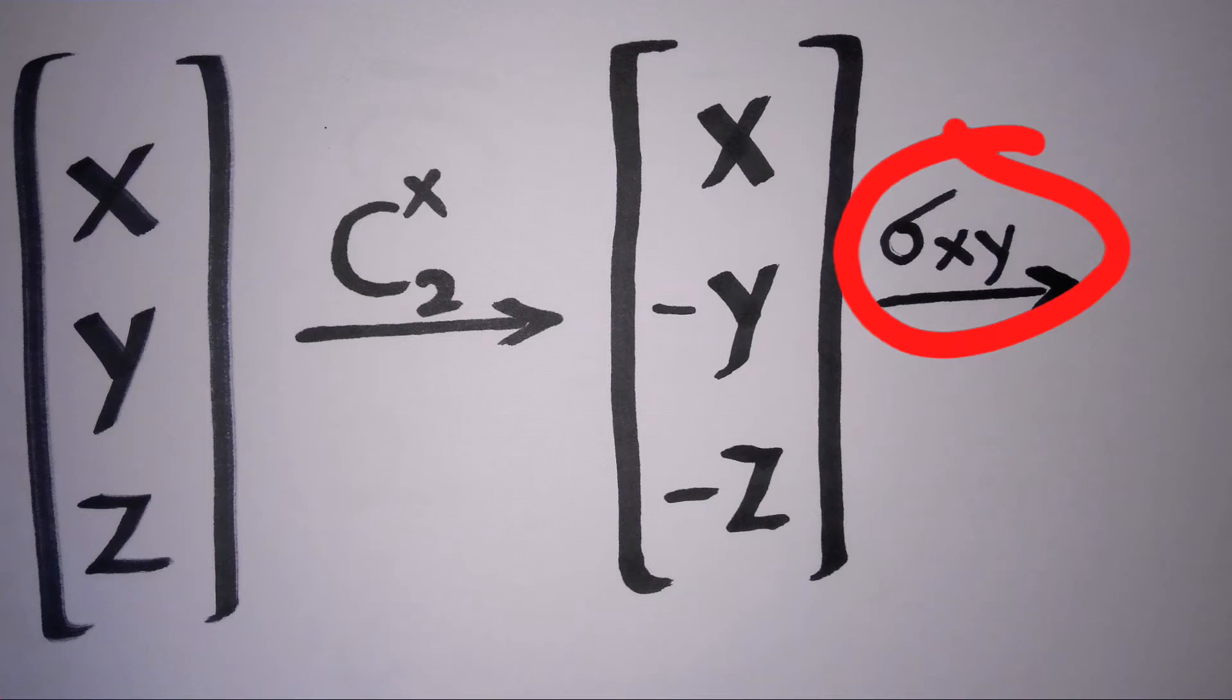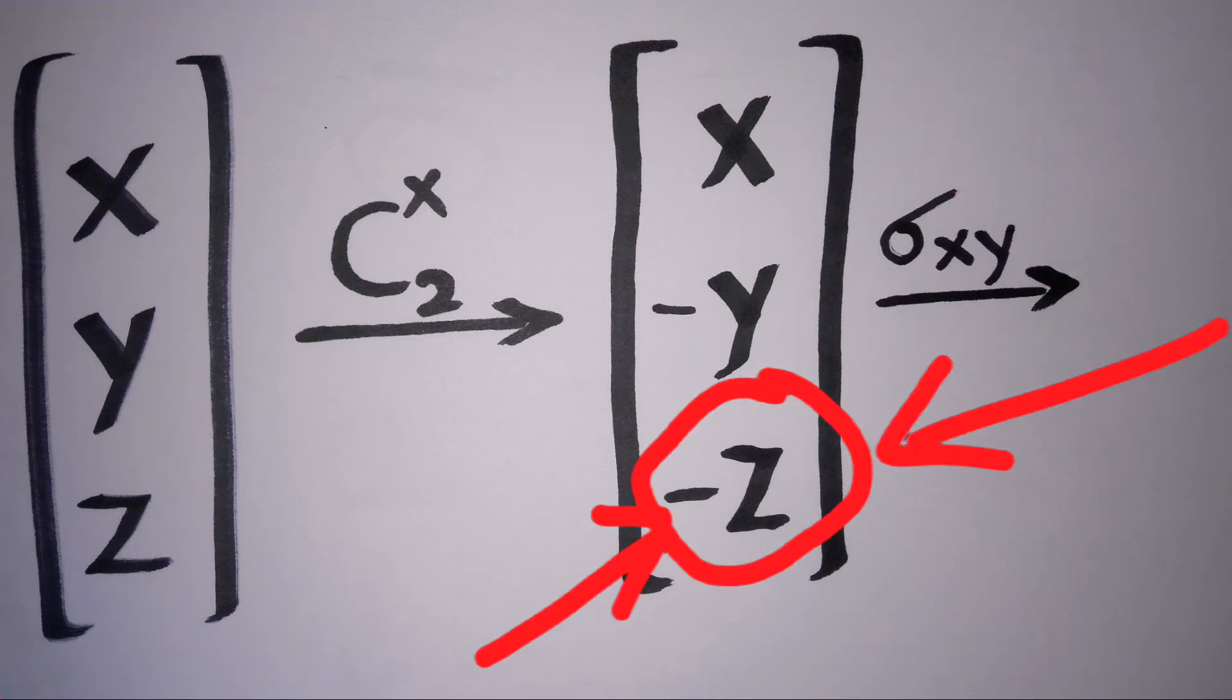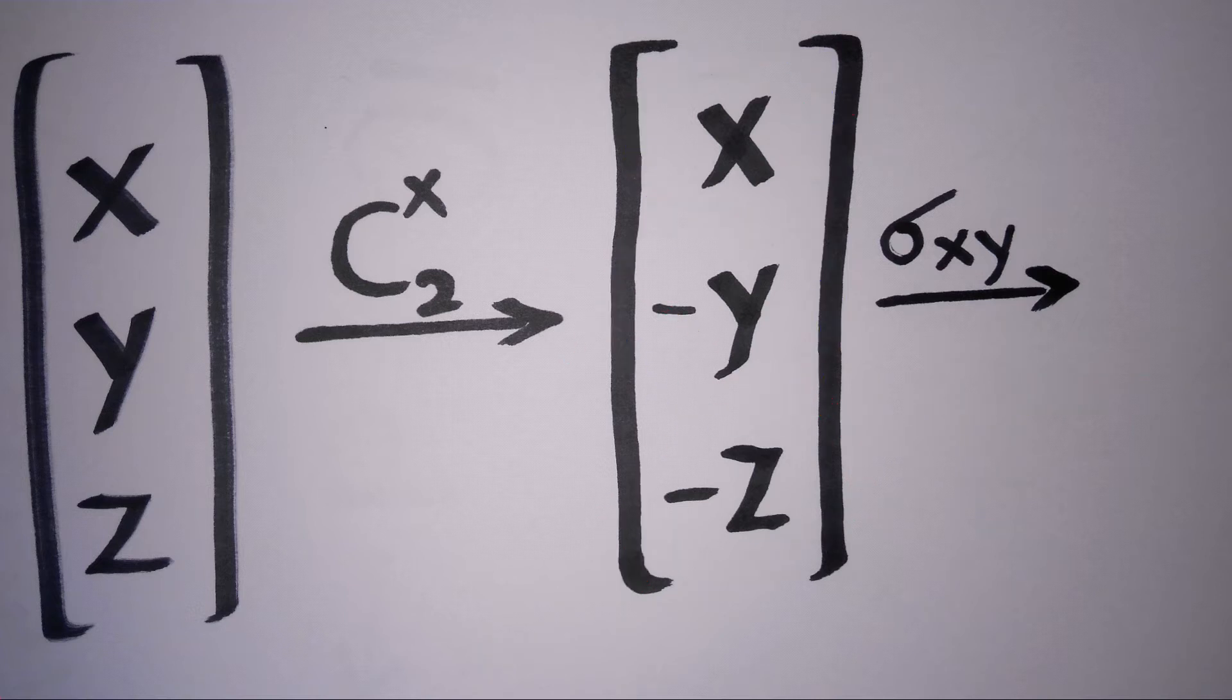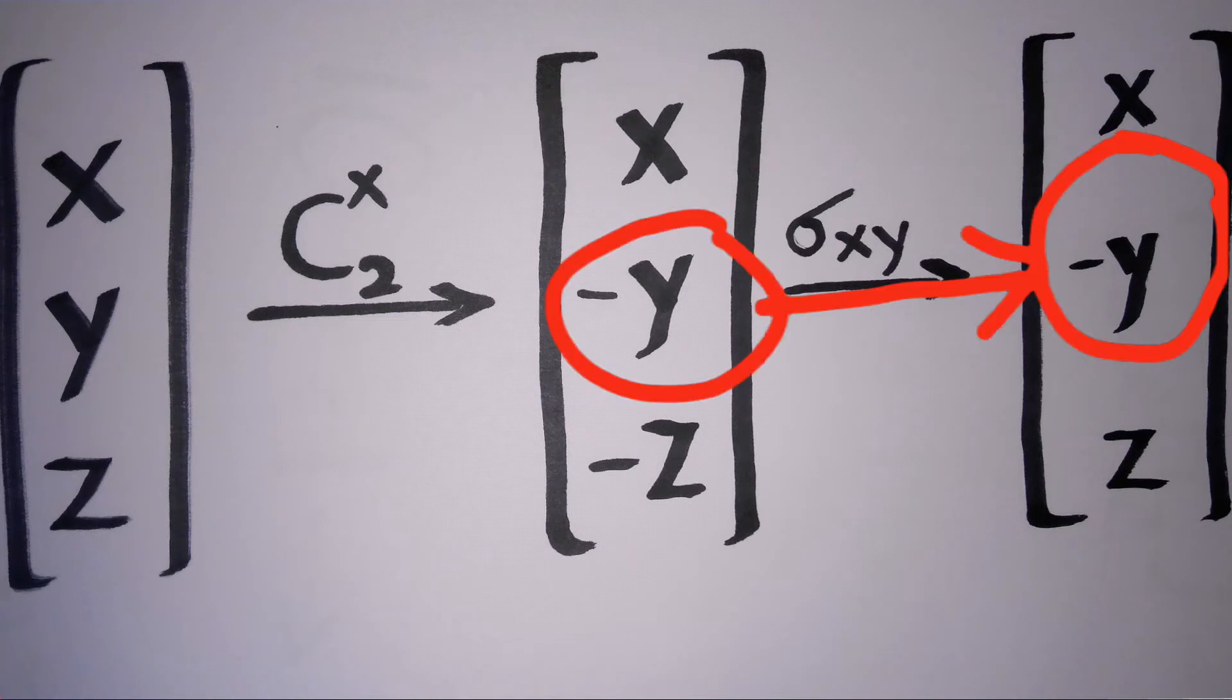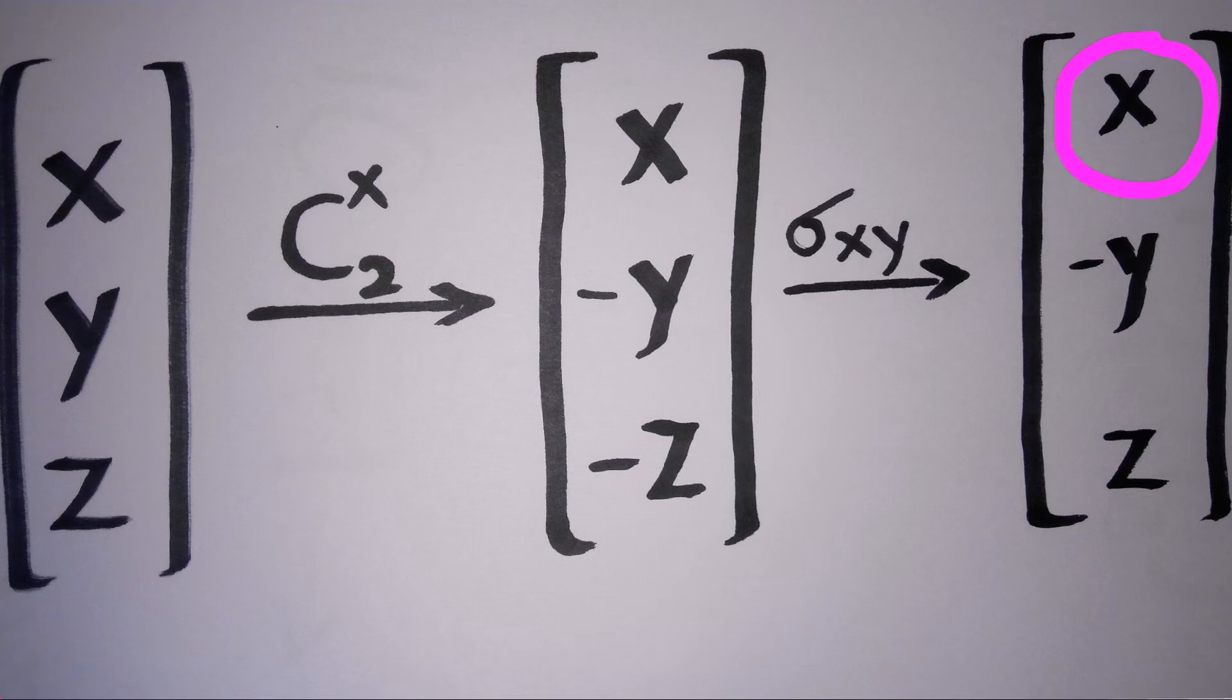For a mirror plane operation, check what is given here. It is given as xy in this case, so we have to change the sign only for the z-axis and not for x and y. So x remains unchanged, minus y remains as minus y, minus z changes to positive z. So we get x, minus y, and z.